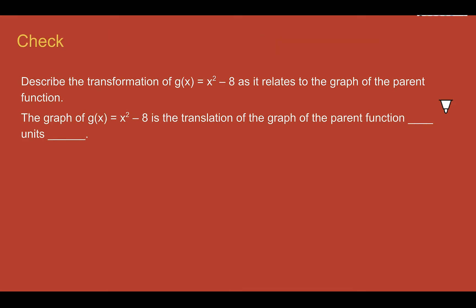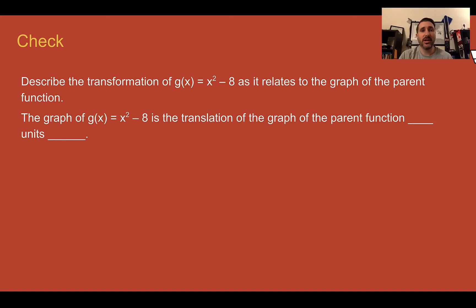Check your understanding: describe the transformation shown as it relates to the parent function. Pause the video now and complete the check. Check your answer: this is shifted eight units down. We can see the minus eight here — down eight.